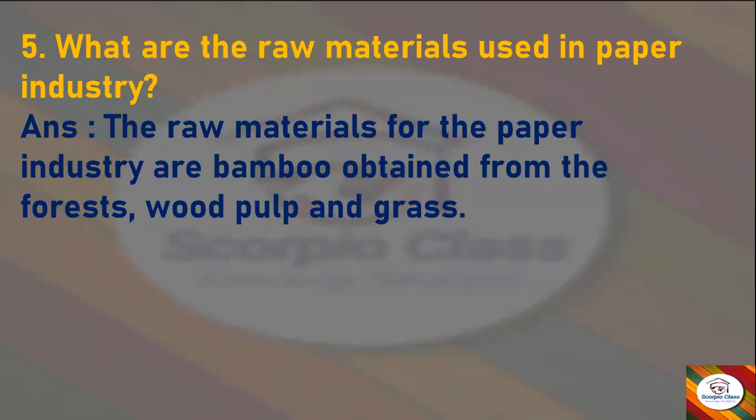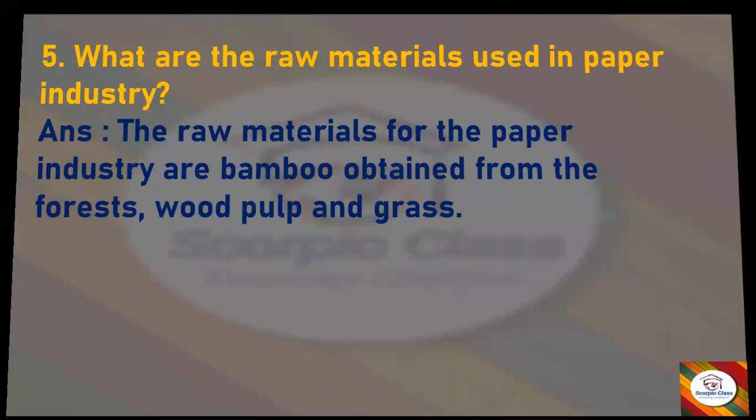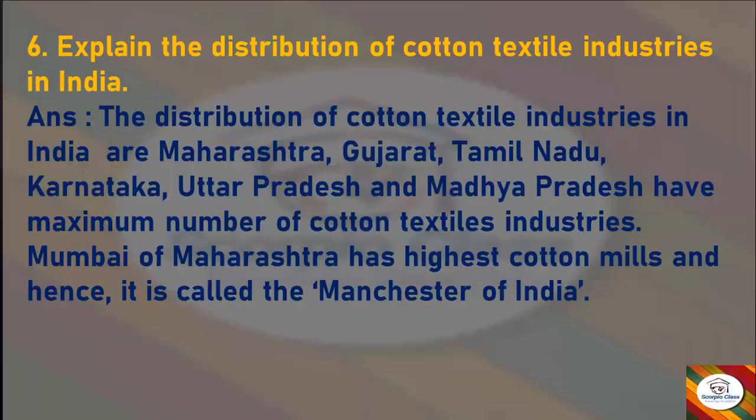Next question: What are the raw materials used in the paper industry? Answer: The raw materials for the paper industry are bamboo obtained from forests, wood pulp, and grass.